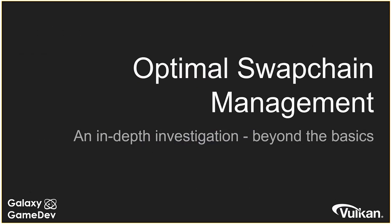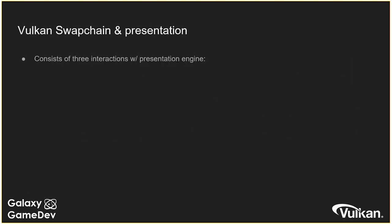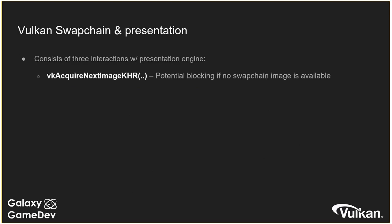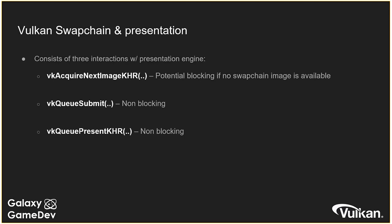The first thing is swap chain management. On Android, there are a few problems with this. Those of you who are familiar with Vulkan probably know there are three ways of interacting with your swap chain: VK acquire next image will return the index of the next available image; VKQ submit to submit render workloads; and VKQ present to tell the presentation engine that you're done rendering and are ready to present an image on screen.